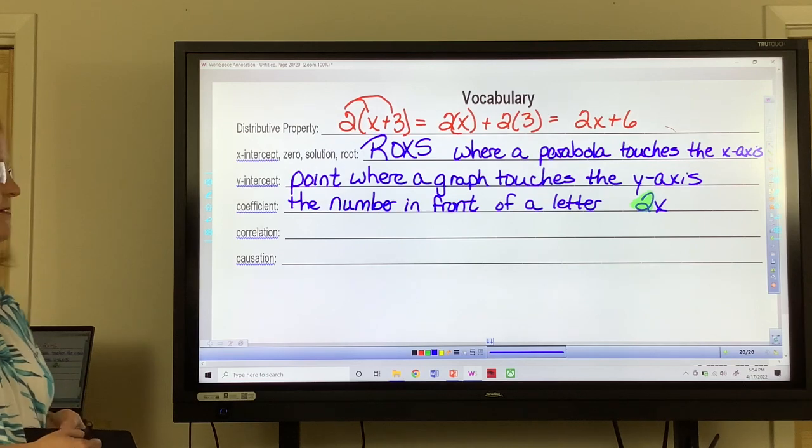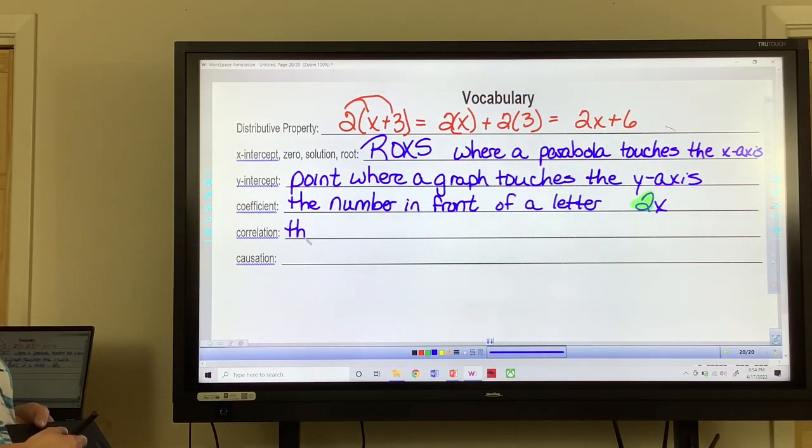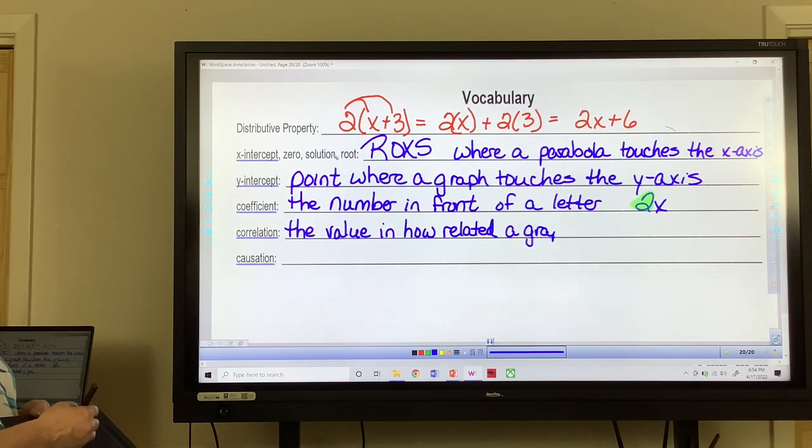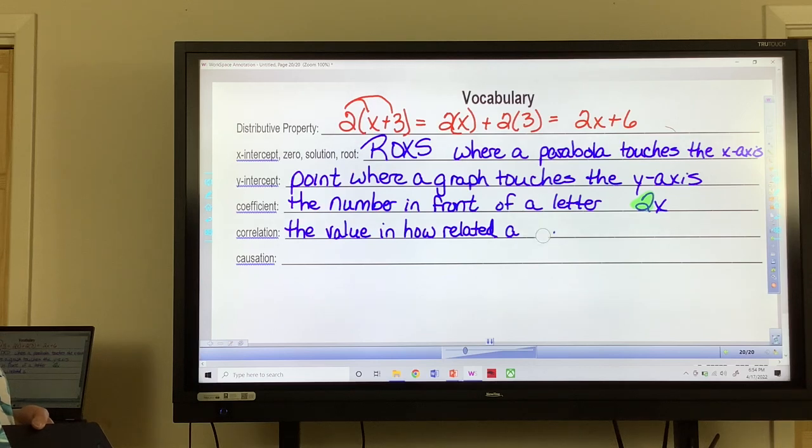Correlation. The value in how related a graph is, no that's wrong, how related a function is to a set of data or a set of points.